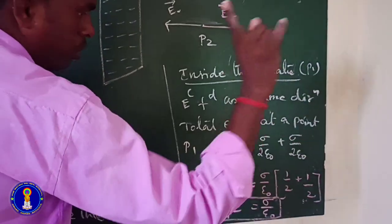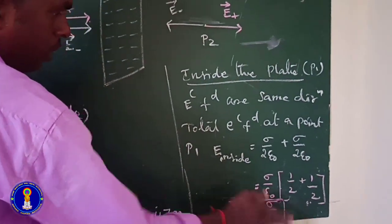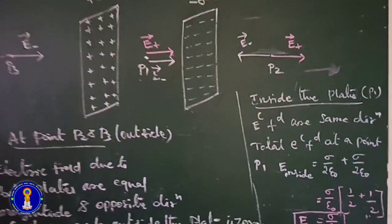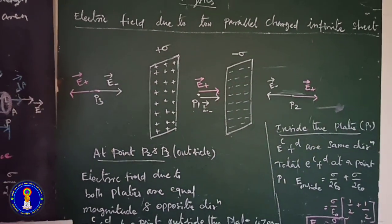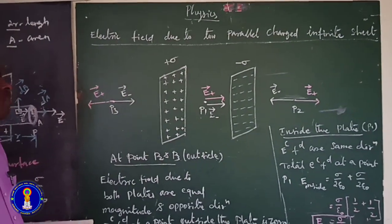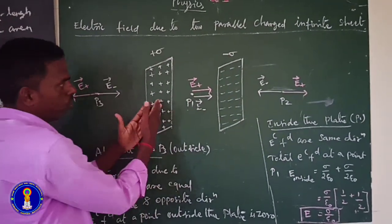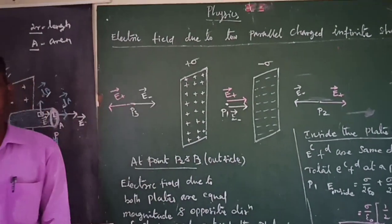One by two plus one by two equals one, so E is equal to sigma by epsilon naught. Inside the plane sheet, the resultant electric field is in the direction from positive charge to negative charge. Thank you.